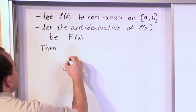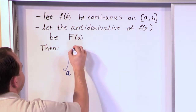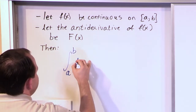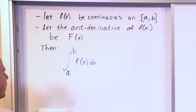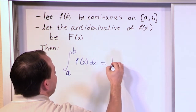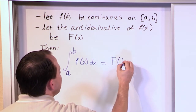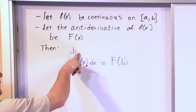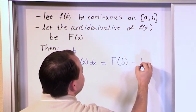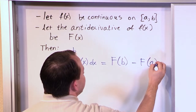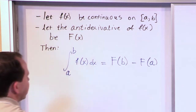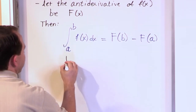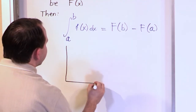Then the integral from a up to b of f(x) dx is equal to the anti-derivative of f evaluated at the top limit of integration minus the anti-derivative evaluated at the bottom limit of integration. This, believe it or not, is actually the fundamental theorem of calculus. And there is a picture that goes along with it.